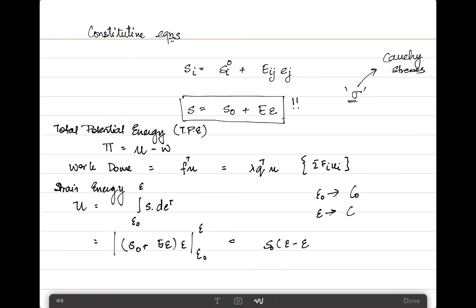This can now be written as epsilon times S naught times epsilon minus epsilon naught, plus E epsilon squared by 2 because it had to be integrated for d epsilon, minus epsilon naught squared.